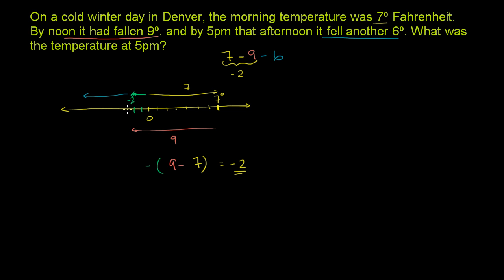So it's going to be negative 2 minus 6. We're going to move another 6 to the left. So we're going to go negative 2, negative 3, negative 4, negative 5, negative 6, negative 7, negative 8. That is 1, 2, 3, 4, 5, 6 spots to the left.